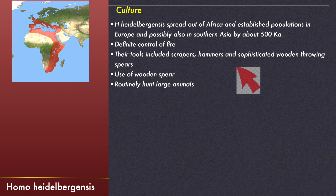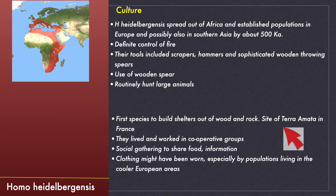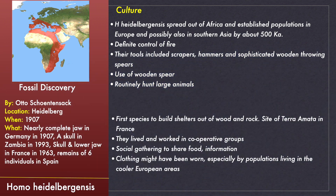Homo heidelbergensis spread out of Africa and established settlements in Europe. By 500,000 years ago they had populations in different parts of Asia as well. There are sound evidences of their control of fire. They used wooden spears to hunt large animals, and also used scrapers and hammers. In France, some shelters made of wood and rock have been discovered near their fossils. They were a social group who shared food and information, and the population living in colder regions of Europe might have worn clothes made of animal skin. Their fossils were first discovered in 1907 in Heidelberg, Germany, where a nearly complete jaw was found. Later a skull was found in Zambia in 1993, a skull and lower jaw in France in 1963, and remains of six individuals were recovered in Spain.